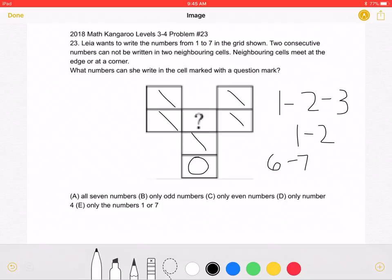Therefore, only the numbers 1 and 7 can go in the question mark. That means answer choice E must be correct.